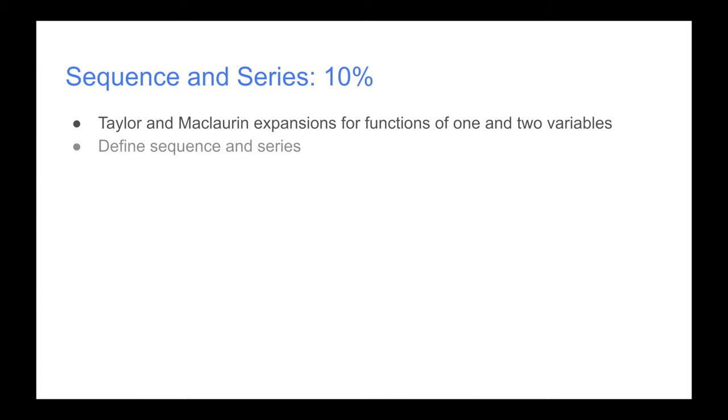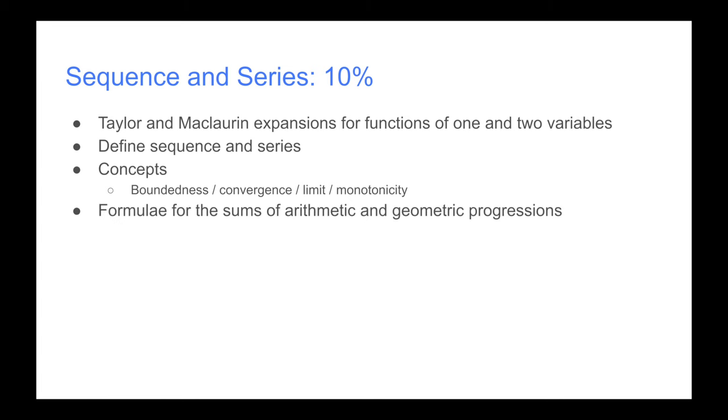Then when it comes to sequences and series, also again about 10%, you can see the syllabus is quite evenly spread. We've got the Taylor and Maclaurin expansions for functions of one and two variables, very important when you do mathematical statistics, especially around moment generating functions. They are quite tricky though, I'm not going to lie. We also need to define sequences and series, look at concepts such as boundedness, convergence, limits, monotonicity, as well as looking at formulae for the sums of arithmetic and geometric progressions and techniques to determine the convergence or boundedness.